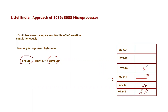Looking at this specific information: the lower byte is at the lower address 07244h, and the next location is 07246h — wait, that is a mistake. It should be 07244, 07245, and 07246. The concept remains the same: 07244h is a lower address compared to 07245h. We store the lower byte 89h at lower address 07244h and the higher byte 57h at higher address 07245h. This particular standard is known as the Little Endian approach.